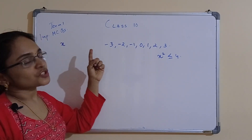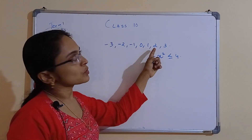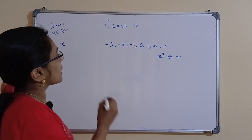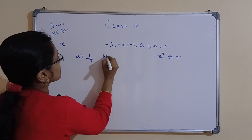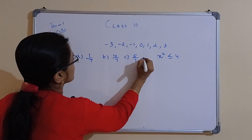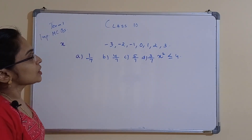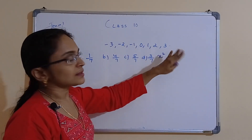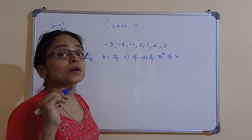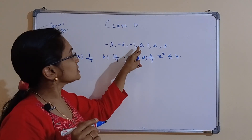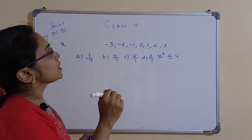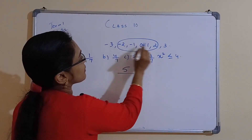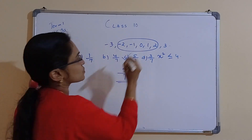A number x is chosen at random from −3, −2, −1, 0, 1, 2, 3. What is the probability that x² ≤ 4? The values satisfying x² ≤ 4 are −2, −1, 0, 1, 2 (since (−2)² = 4, (−1)² = 1, 0² = 0, 1² = 1, 2² = 4 — all ≤ 4; but 3² = 9 and (−3)² = 9 are not). So 5 favorable outcomes out of 7. Probability = 5/7. This option is correct.